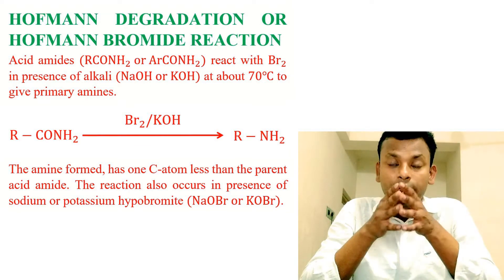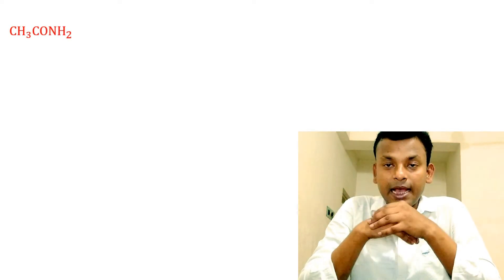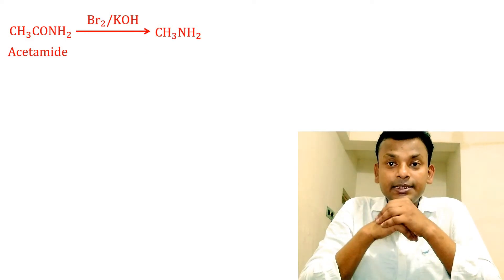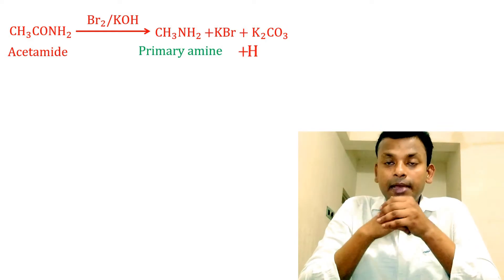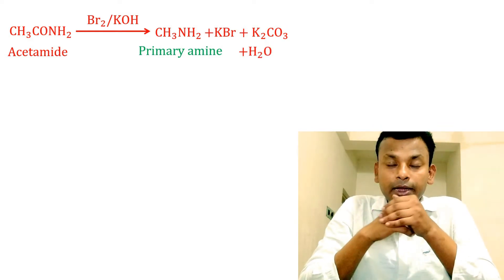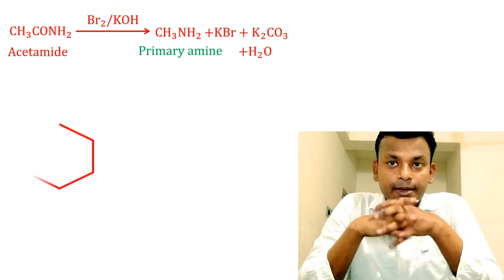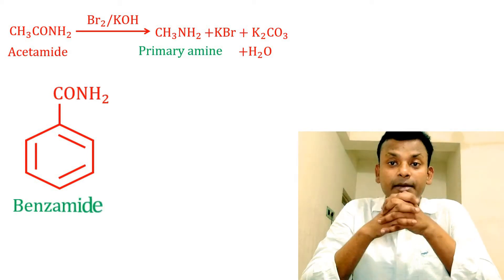CH3CONH2, that is acetamide, reacts with Br2 and KOH gives CH3NH2, that is primary amine, gives KBr, gives K2CO3 plus H2O. Second example.